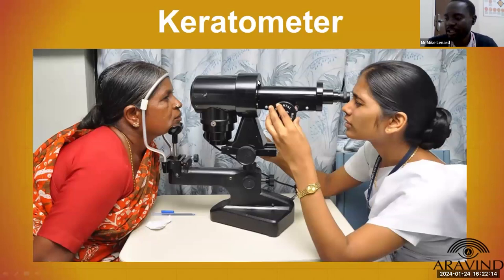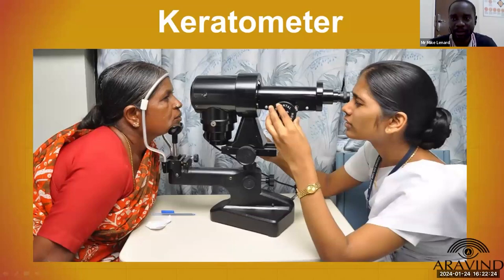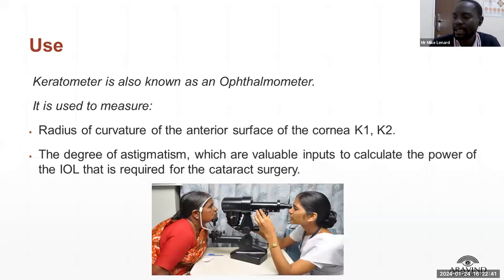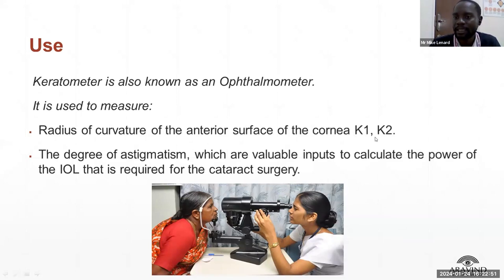Today we are going to share about the keratometer. It's an important piece of equipment used in most ophthalmology settings. A keratometer is also known as an ophthalmometer, and it's used to measure the anterior surface of the cornea — specifically K1 and K2.